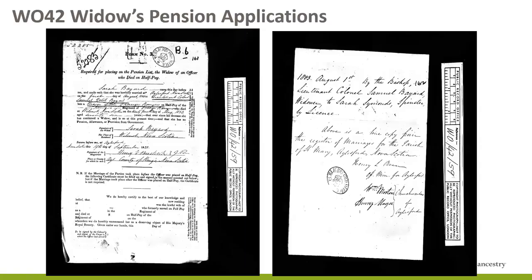Widows' pension applications were claims submitted by the widows of officers of the King's German Legion and American or British regiments who died in service or while on half pay. Files include copies of wills, birth certificates, and personal papers. This would only be relevant if the widow decided to reside in Canada after the Revolution, but the records dating from the late 18th century might include a treasure or two for you.